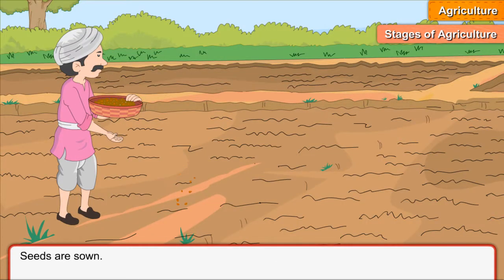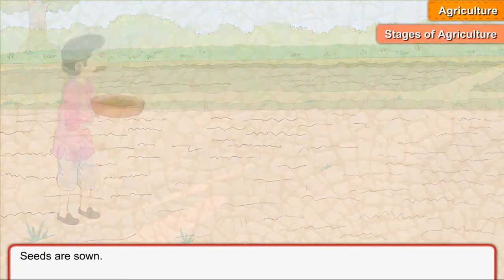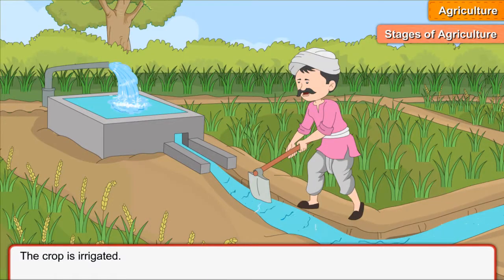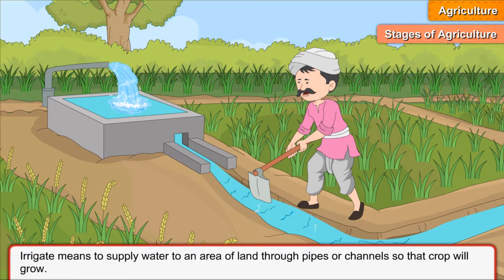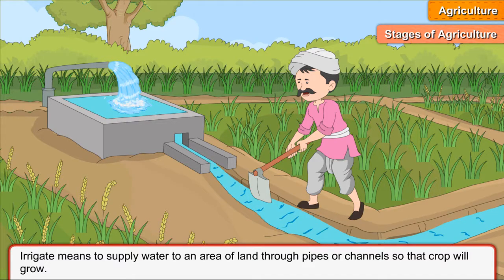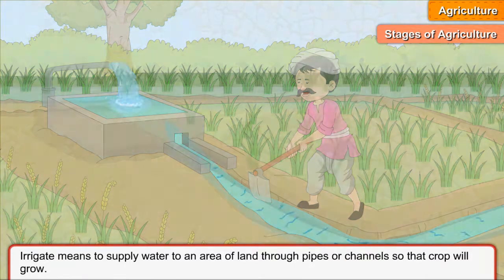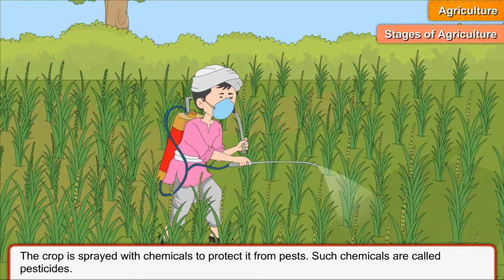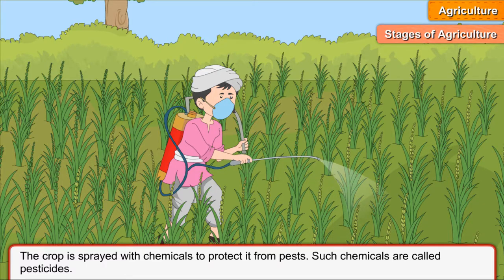Seeds are sown. The crop is irrigated. Irrigate means to supply water to an area of land through pipes or channels so that crops will grow. The crop is sprayed with chemicals to protect it from pests. Such chemicals are called pesticides.